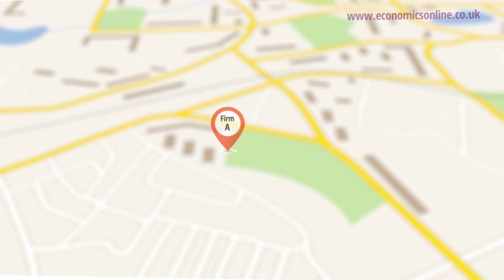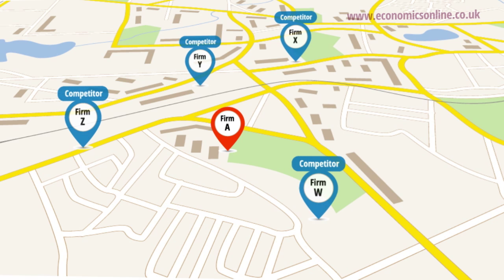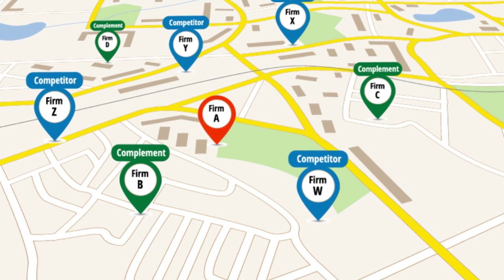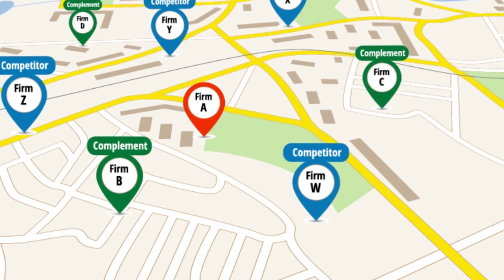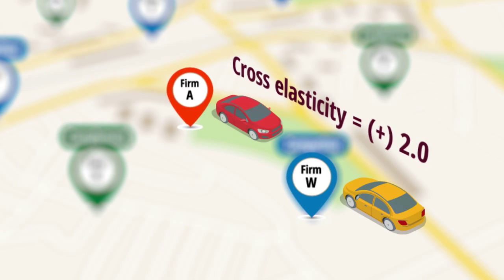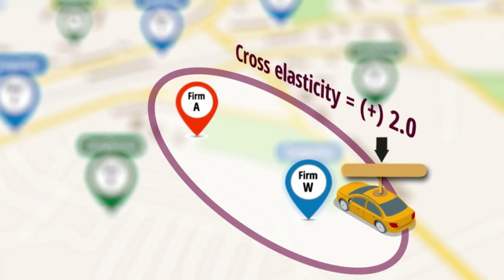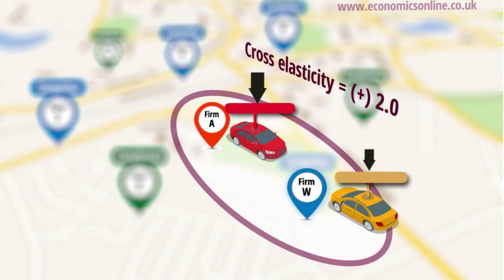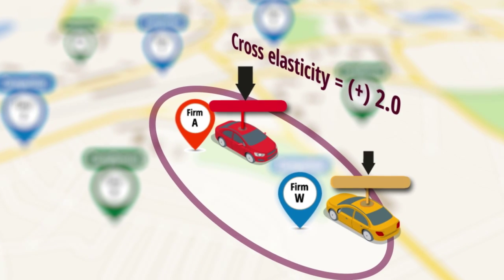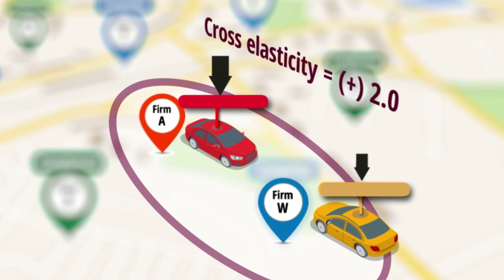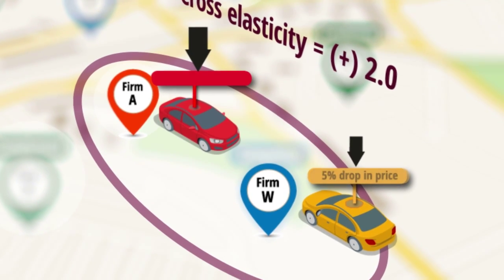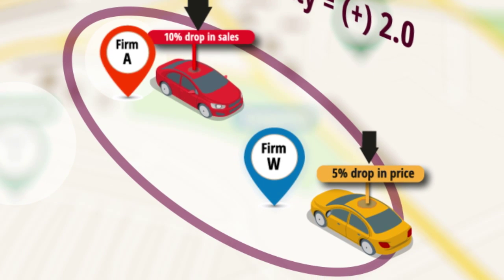Firms are interested in calculating cross-elasticity because it helps them map out their market to discover who their competitors are and how significant they are, as well as identifying significant complementary products. For example, if a motor manufacturer estimates that one of its models has a cross-elasticity of plus 2.0 with respect to a similar model produced by a competitor, then any drop in price by the rival will have a greater than proportionate effect on the quantity demanded of its car. This makes the firm vulnerable to competition on price. Assuming the XED for two substitute motor cars is plus 2.0, a reduction in the price of one by 5% will lead to a 10% reduction in demand for the other.